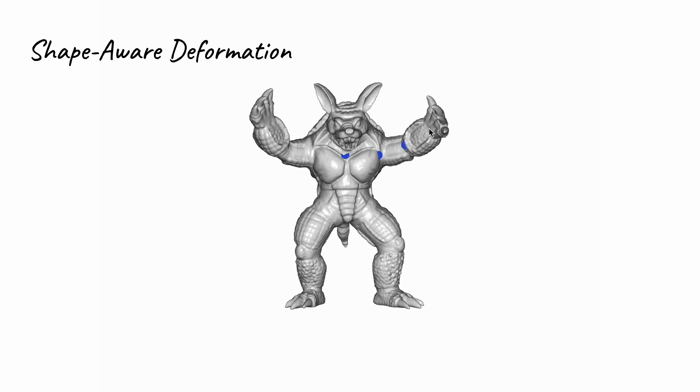This example illustrates shape-aware deformation, specifically the as-rigid-as-possible technique. Users select handle points, shown in blue, on the model's surface to manipulate and deform it. By dragging these points, they can achieve the desired pose of the 3D model.